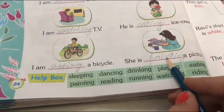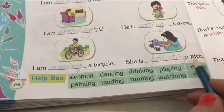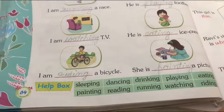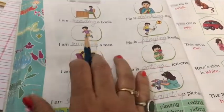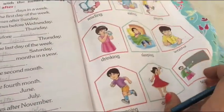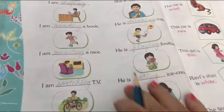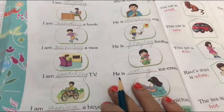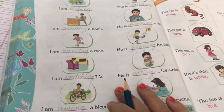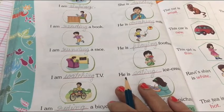She is painting a picture. Painting is an action word. Students, your homework is you have to read this lesson at your home and do this work in your book only. Students, take care. Bye.